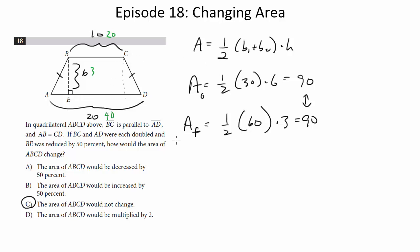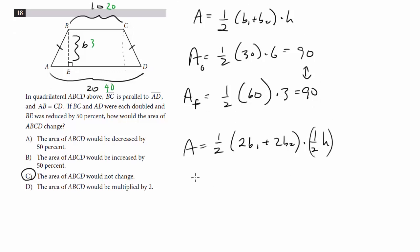But if we look at this abstractly, it makes sense why this wouldn't change. So what we're basically doing is we're taking our base 1 and base 2, and we're multiplying them by 2. But then we're reducing by 50%, our height. So it's one-half times height.